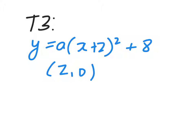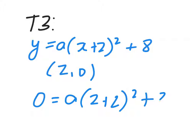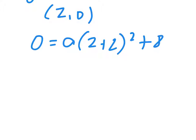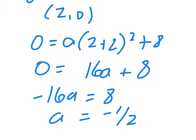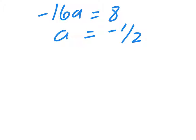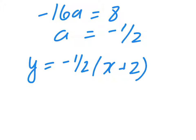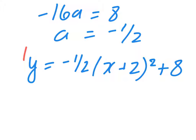There's a value for y and x that we can fill in: 0 equals a times 2 plus 2 squared plus 8. Well, 2 plus 2 is 4, squared is 16, so 0 equals 16a plus 8. That means minus 16a equals 8, so a is minus a half. So that's part a answered. The equation in vertex form is y equals minus a half times x plus 2 squared plus 8.